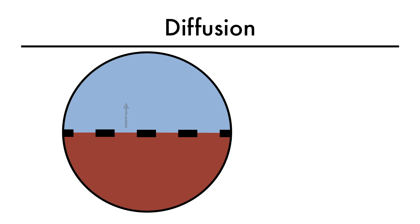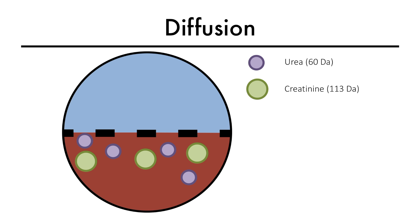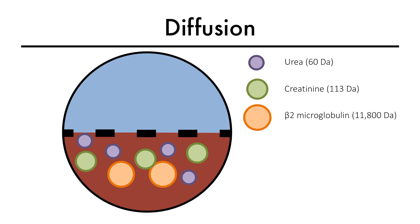Solutes can be divided based on their molecular weight. Small solutes, such as urea and creatinine, have a molecular weight of less than 500 daltons. Middle molecules, such as beta-2-microglobulin, have a molecular weight between 500 to 60,000 daltons. Albumin is a large molecule with a molecular weight of 66,000 daltons.